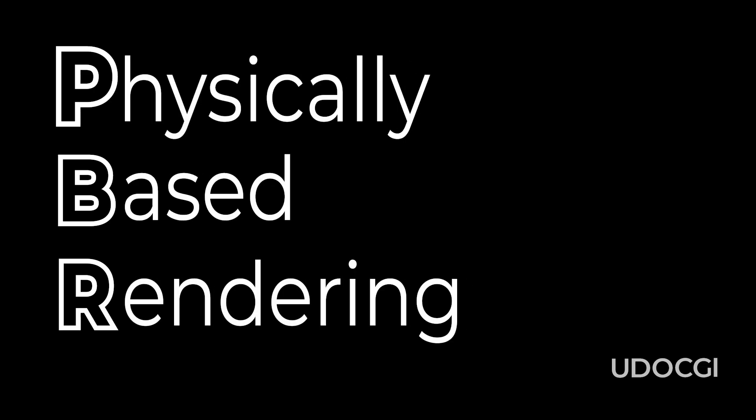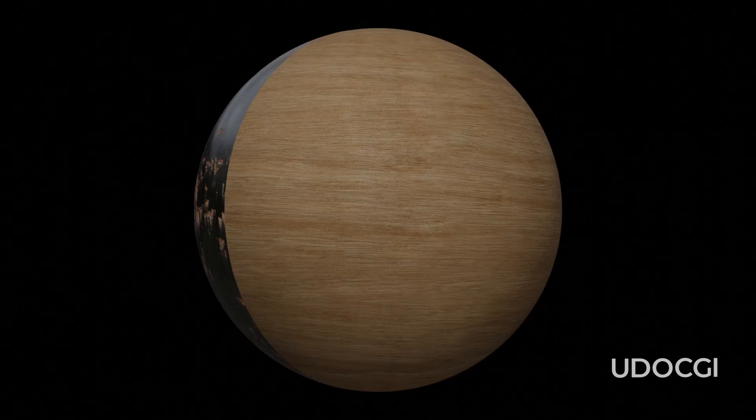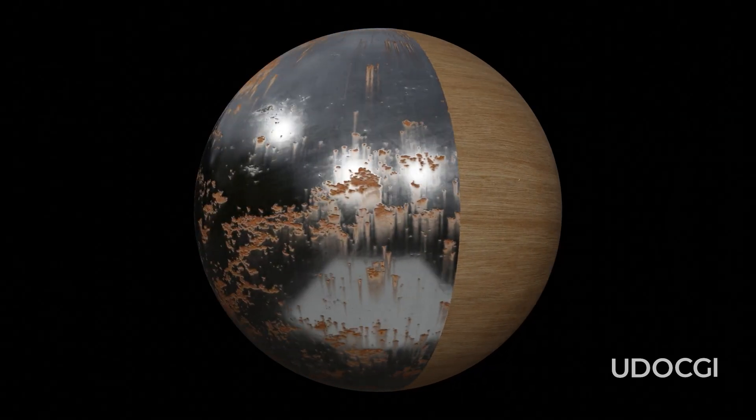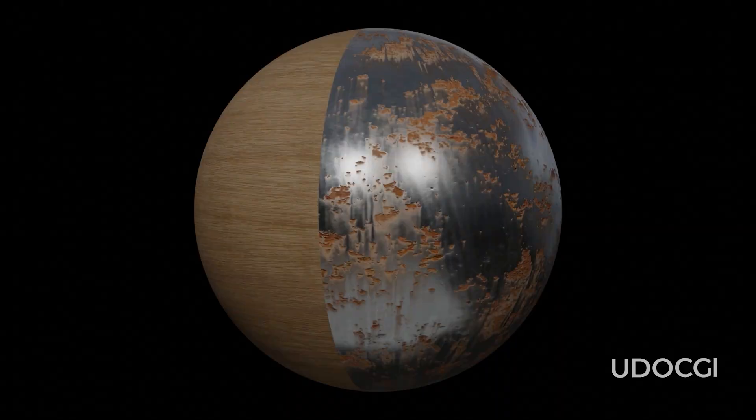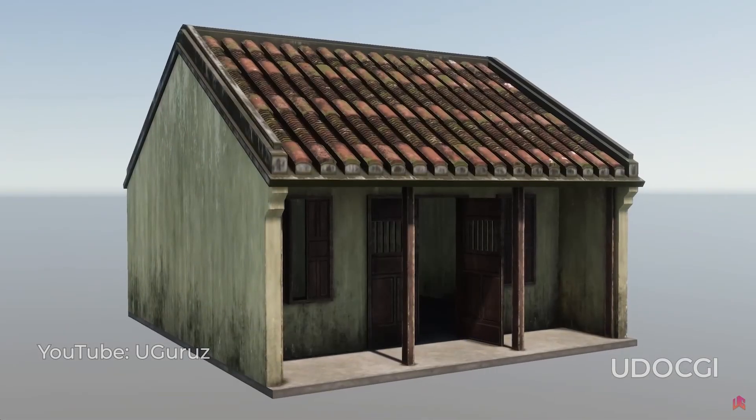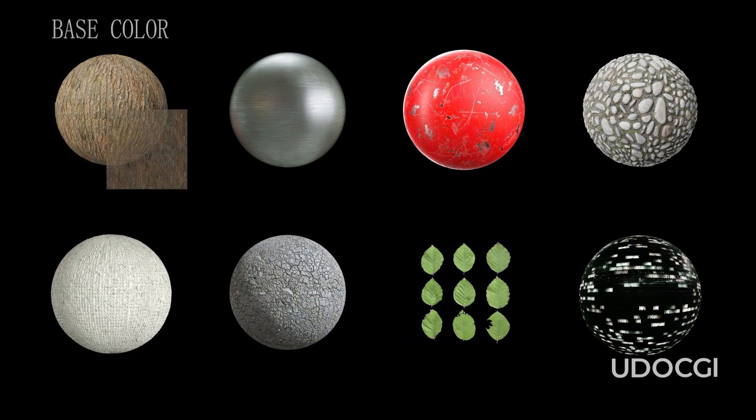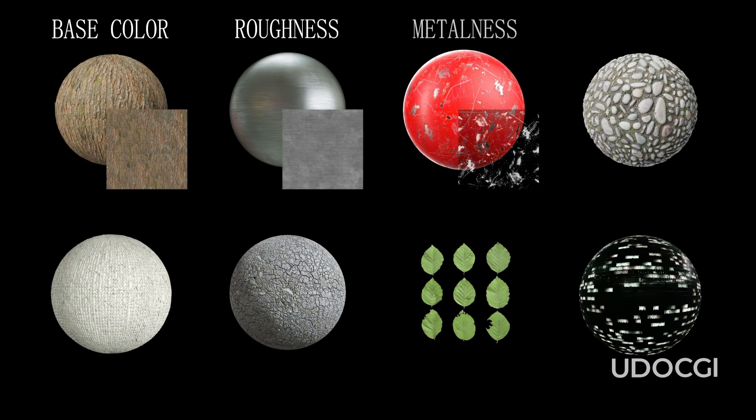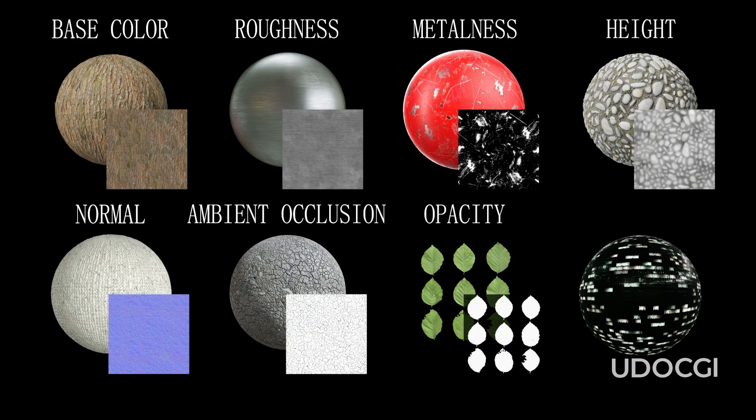PBR stands for Physically Based Rendering. PBR focuses on accurately simulating the physical properties of materials, how light interacts with surfaces, and how these interactions are perceived by us. This ensures materials look consistent across different applications and rendering engines. Now that we understand the benefits of PBR for achieving realistic materials, let's explore the various PBR texture maps and how to use them in Blender to enhance your material workflows.